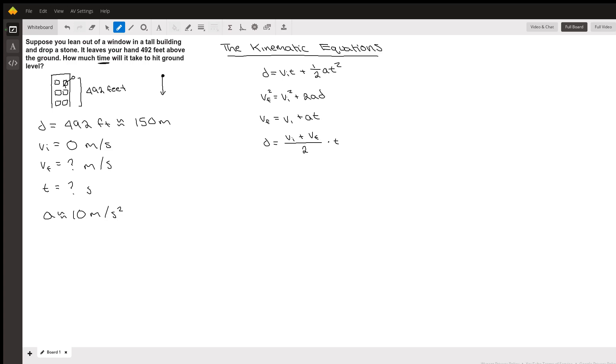The first thing I did, which most often is the first thing you do in a physics problem, is draw a picture. So I drew a picture of this guy 492 feet above ground about to drop a stone.